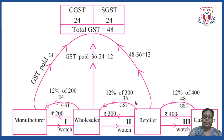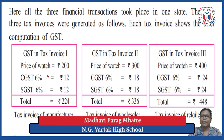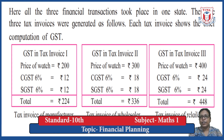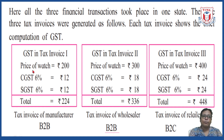Here you can see the tax invoices — the first tax invoice for the manufacturer, the second for the wholesaler, and the third for the retailer, since all three prepare bills. All transactions took place in the same state. For the manufacturer, the price of the watch is 200, CGST paid is 12, SGST paid is 12, and total cost is rupees 224. This is called B2B — business to business.